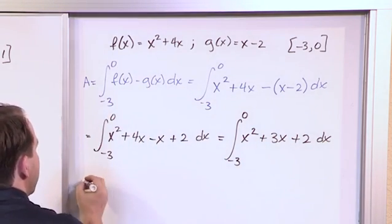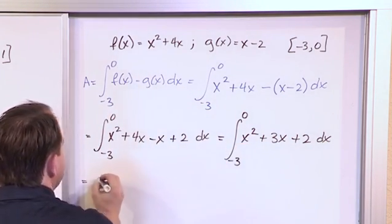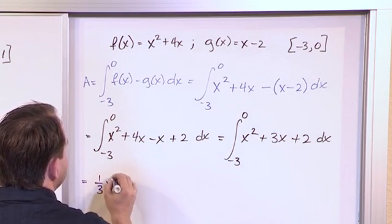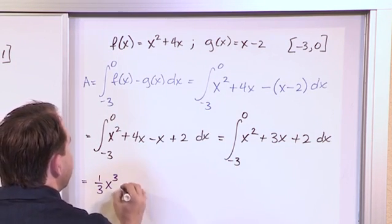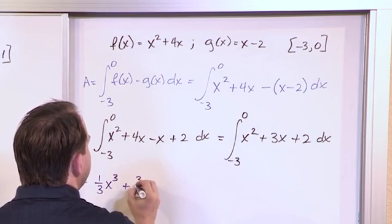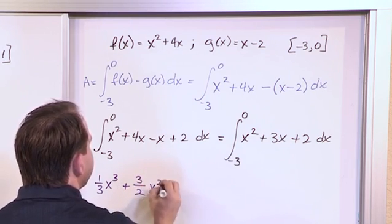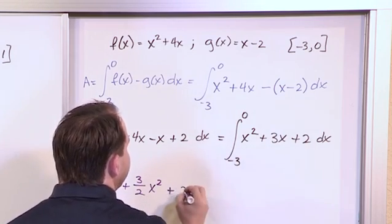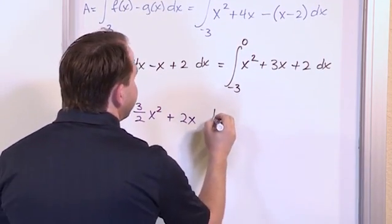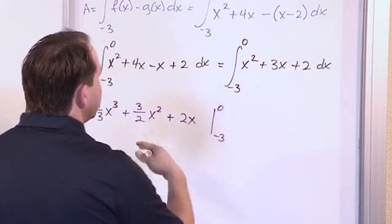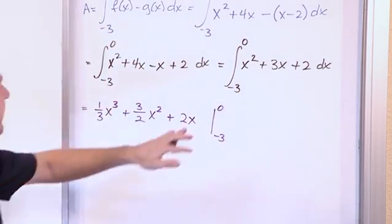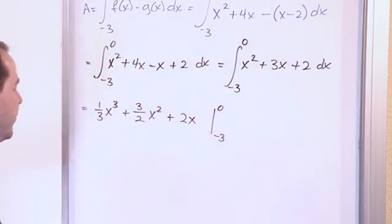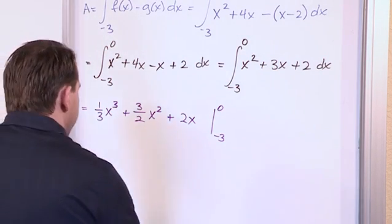This is a nice polynomial. We know how to integrate that. So the integral of this is 1 third x cubed. The integral of the second term is 3 over 2 x squared, because we're just taking the exponent plus 1. And the integral of the third term is 2x, and we've seen that a million times already. And we have to evaluate it from negative 3 to 0. Notice we haven't had to do any substitution, because this integral is already in a form we know how to solve, without really blinking.